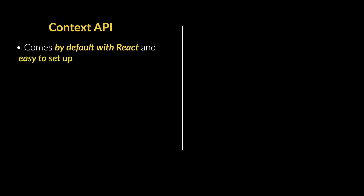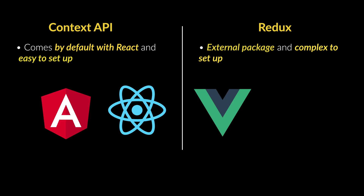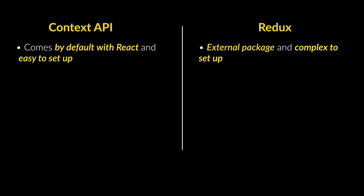The Context API, as the name suggests, is part of the React library, so you don't need to install any package to use it, and it is pretty easy to set up. Redux, on the other hand, is a third-party package that works with any JavaScript framework such as Angular, React, Vue, and also vanilla JavaScript. To use Redux you need to install it separately and the setup is pretty complex, requiring lots of boilerplate code.